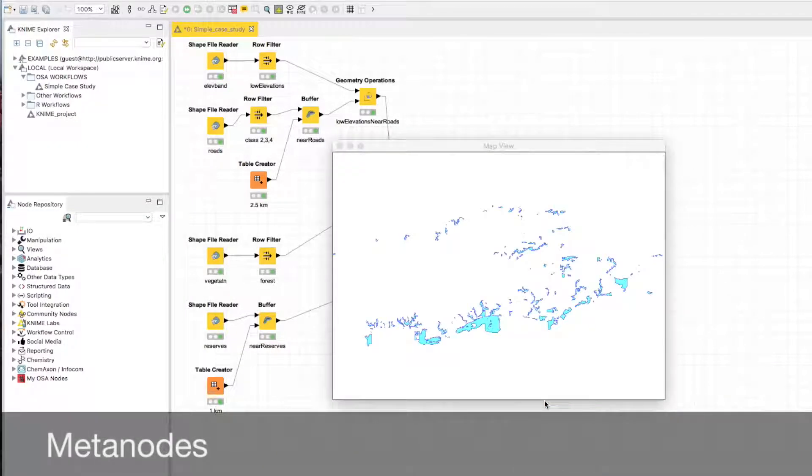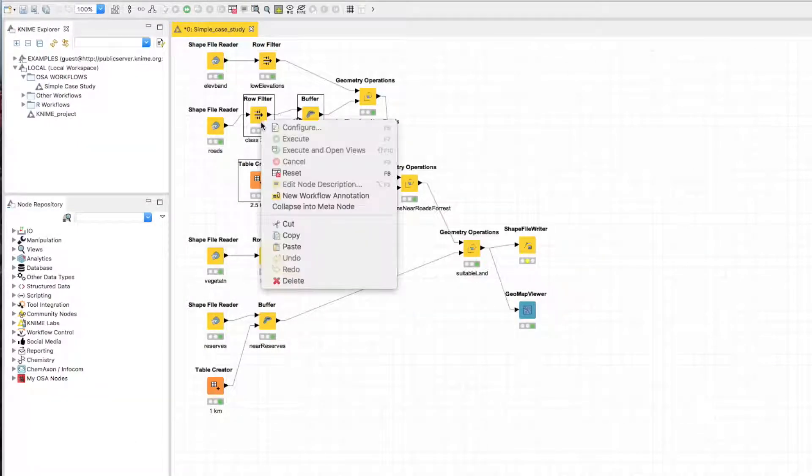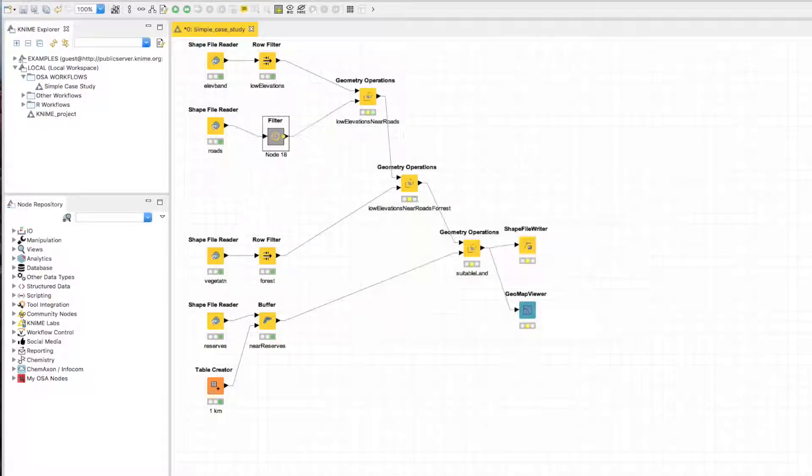Workflows can also be hierarchical, with sub-workflows being grouped together into metanodes. By creating metanodes, the user can manage the complexity of the workflow.